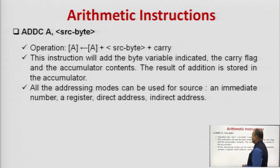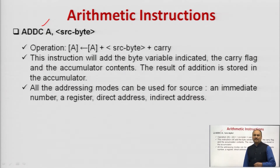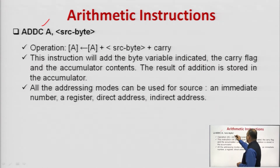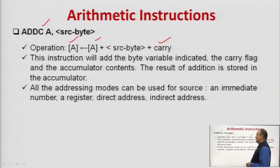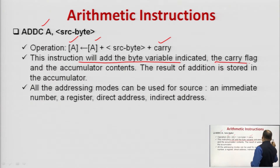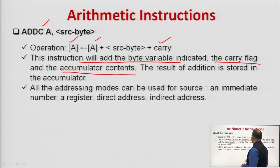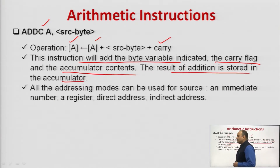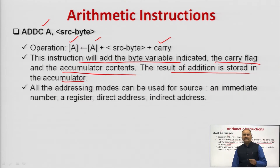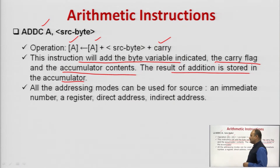Next is the ADDC A, source byte instruction. The 'C' indicates that the arithmetic addition is performed with the carry. The operation is: the specified source byte is added with the content of the accumulator along with the carry flag, and the result is stored back into the accumulator. This instruction adds the byte variable indicated, the carry flag, and the content of the accumulator, storing the result in the accumulator.